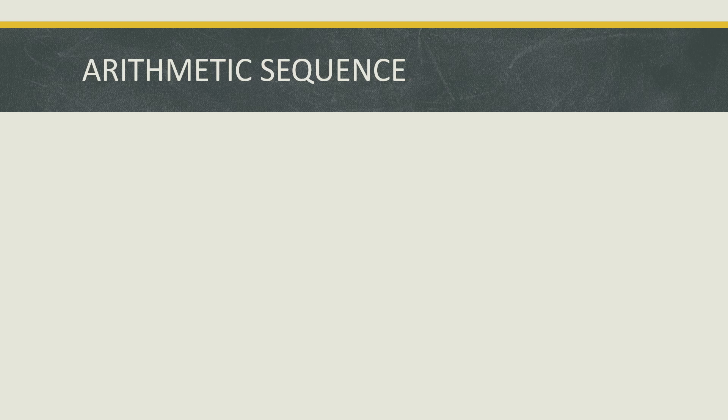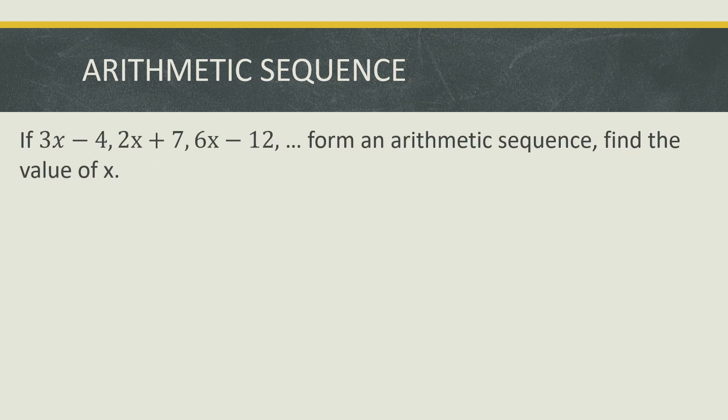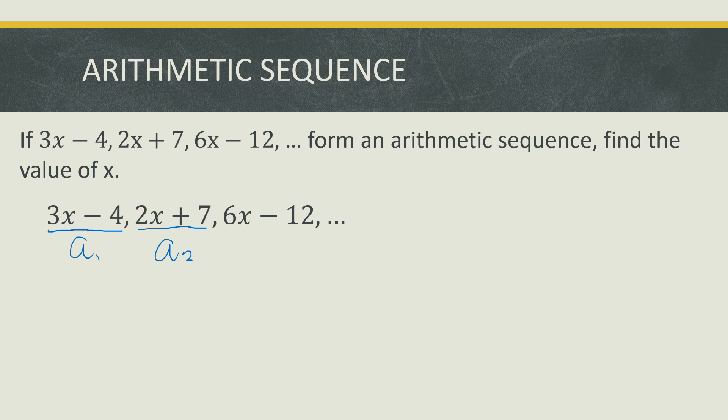Some problems in arithmetic sequence have terms in the form of algebraic expressions. For example, if 3x minus 4, 2x plus 7, 6x minus 12, and so on form an arithmetic sequence, find the value of x. So let us show that 3x minus 4 is our first term or a sub 1, 2x plus 7 is our a sub 2, and 6x minus 12 is our a sub 3.